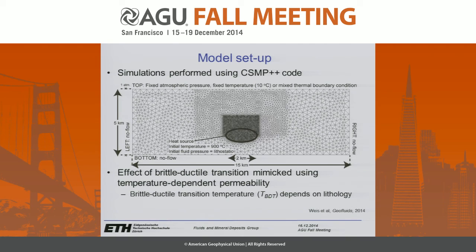The brittle-ductile transition temperature depends on the lithology you're considering. In the Haiba and Ingebrigtsen study, they assumed that permeability began to be reduced from the host rock value at 360 degrees Celsius. This is a good assumption for granitic or quartz-bearing rocks, but for basaltic rocks this temperature can be much higher, so I also test shifting this brittle-ductile transition temperature to 450 or 550 degrees Celsius.